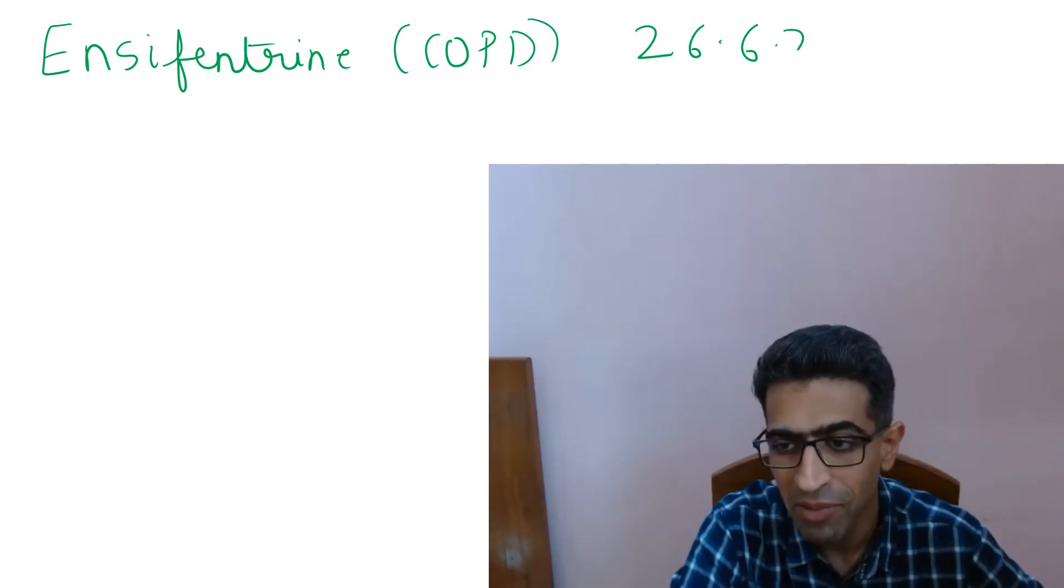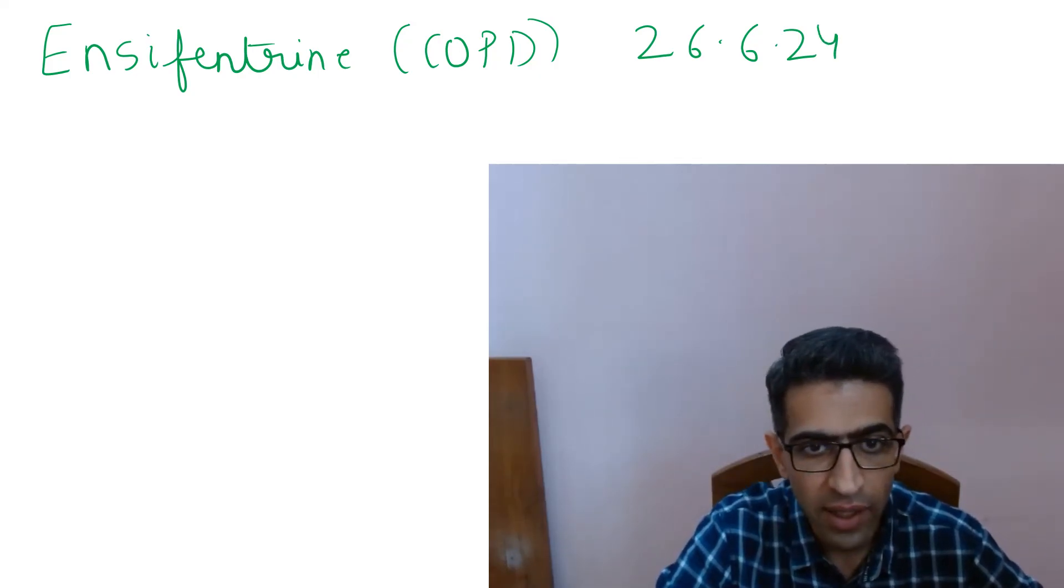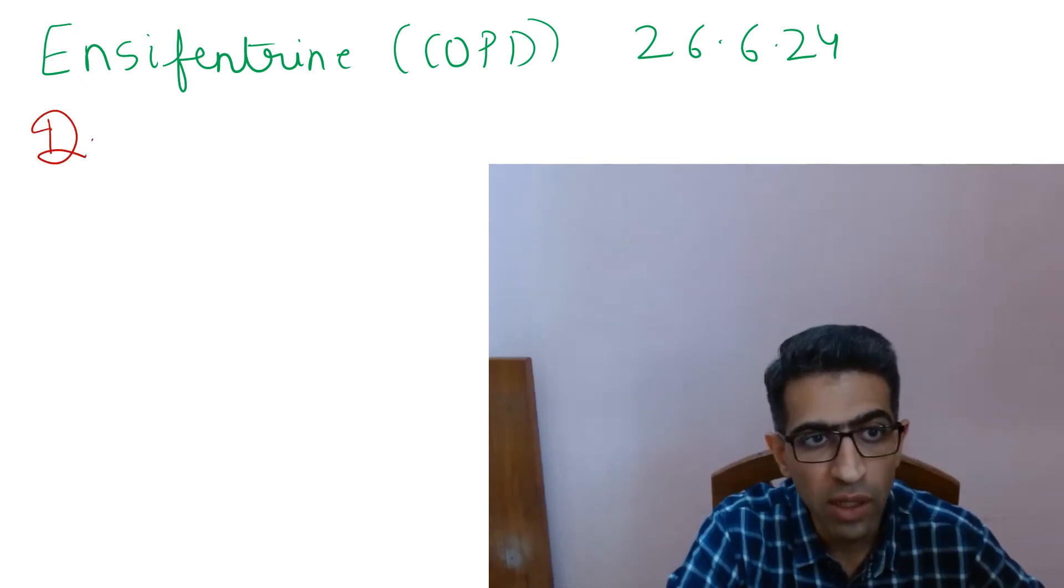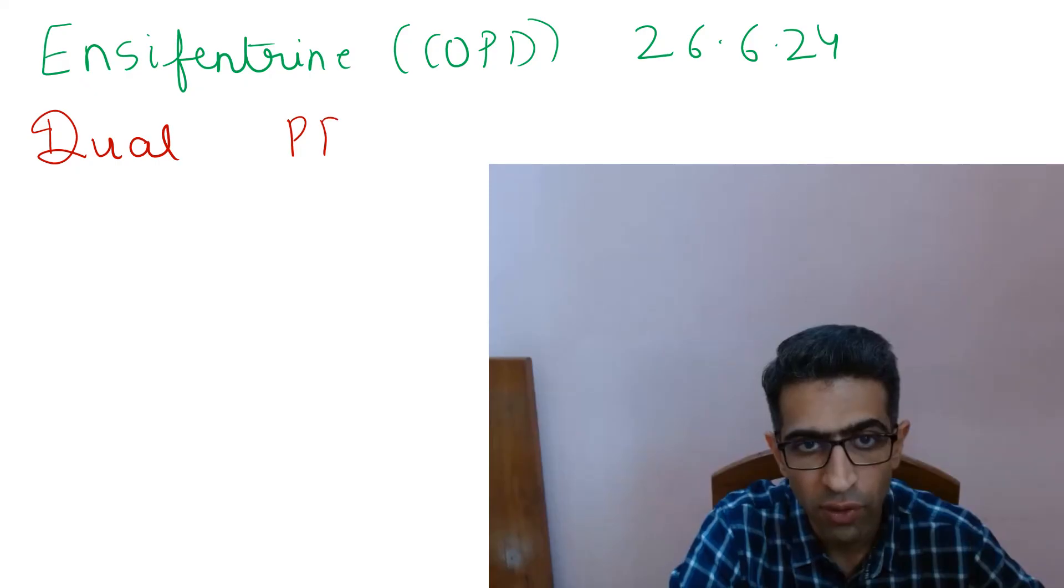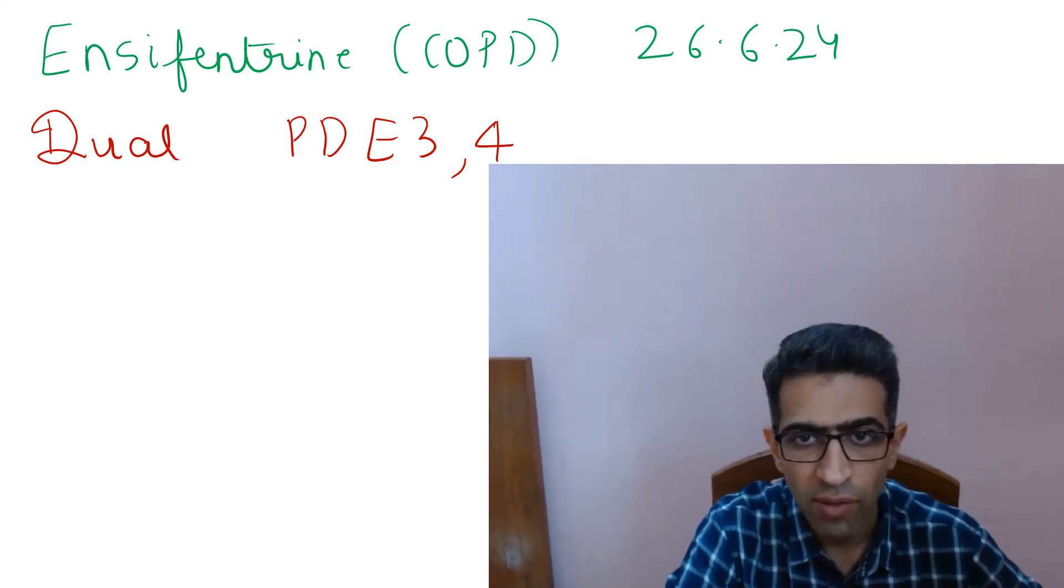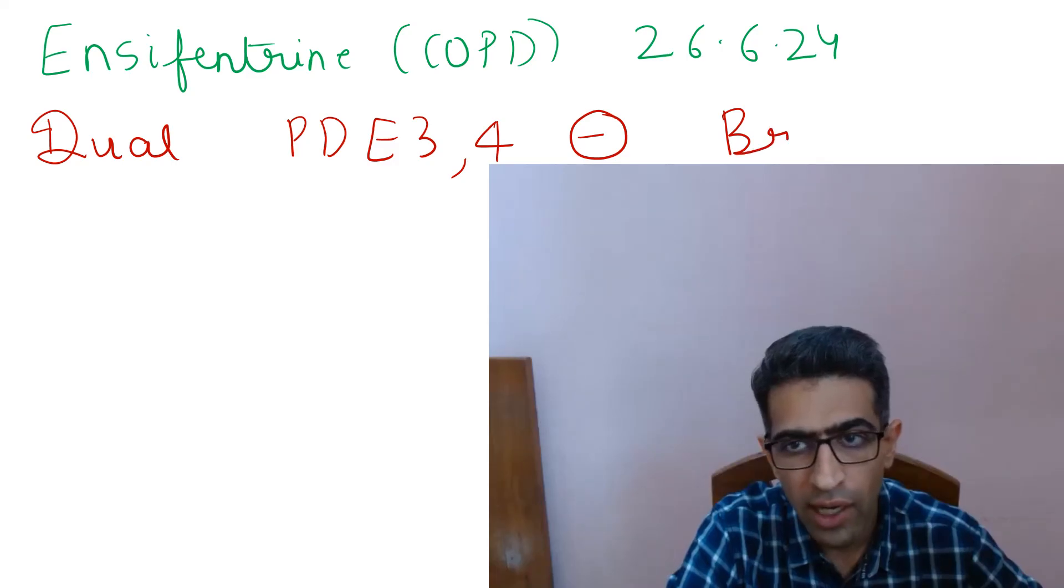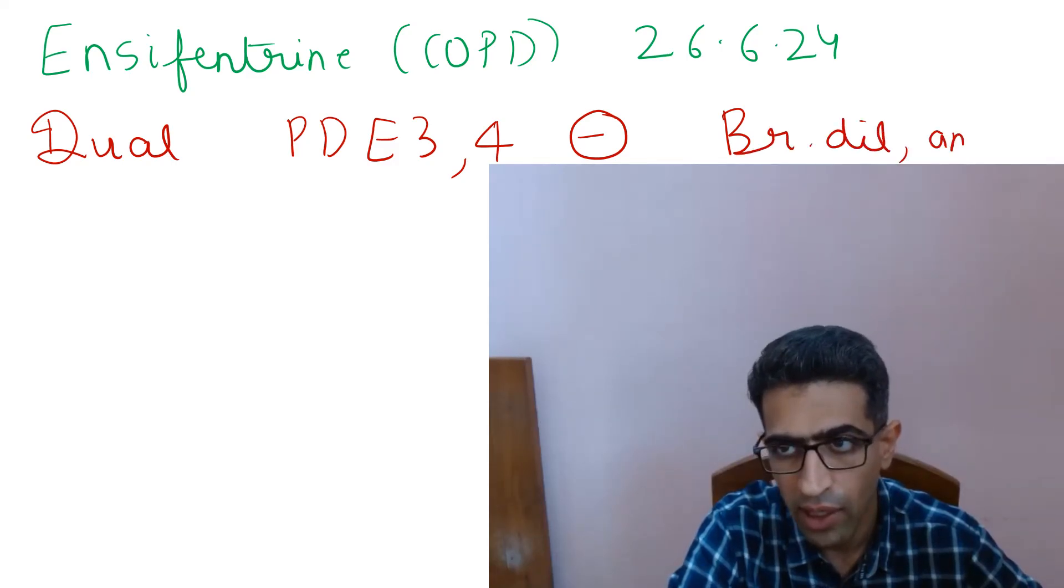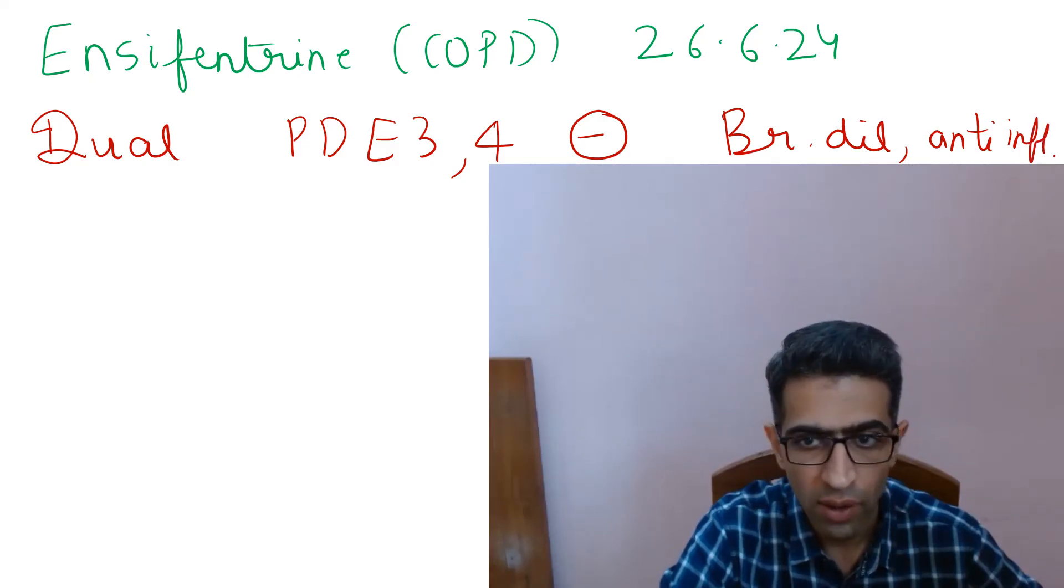Ensifentrine, indication is chronic obstructive pulmonary disease, US FDA approval status 26th of June. This is a first-in-class selective mechanism of action dual phosphodiesterase - it inhibits both phosphodiesterase 3 and 4 with bronchodilator and anti-inflammatory effects.